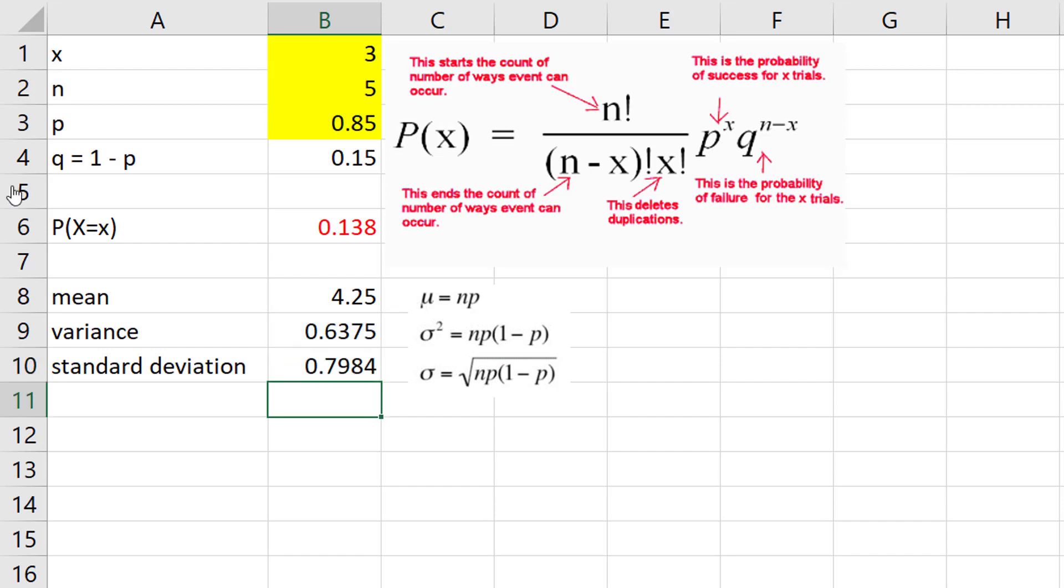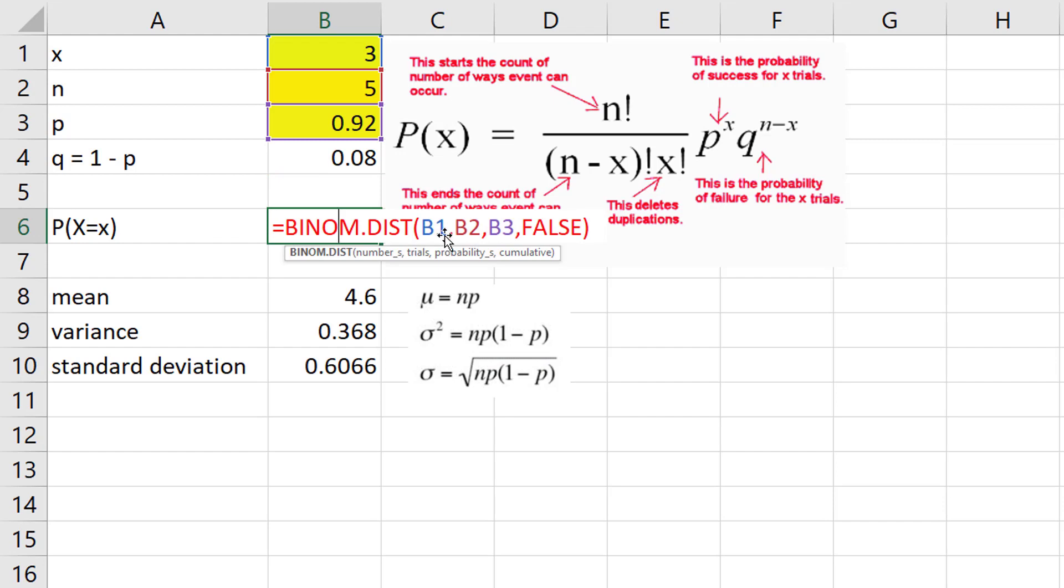Again, don't forget reusability, reusability. What if I now wanted to know the probability of just one success? I change that to a one, I press enter, and that updates. What if I knew the probability of a success was a little bit higher, like 0.92? Everything updates. So again, remember to reference your cells and definitely learn this binomial probability formula in Excel because it makes it very quick and easy to not have to do this manually.